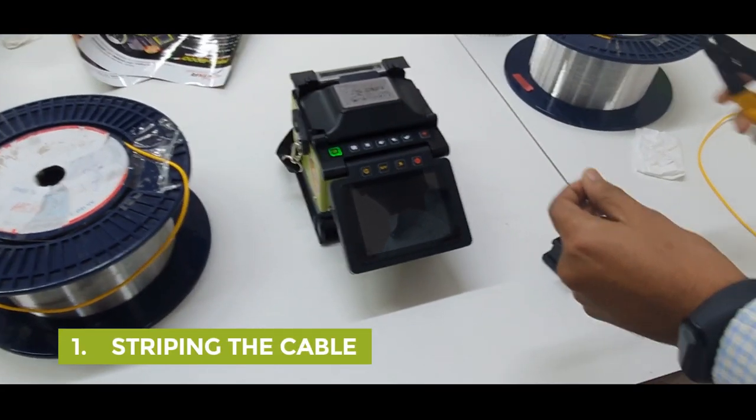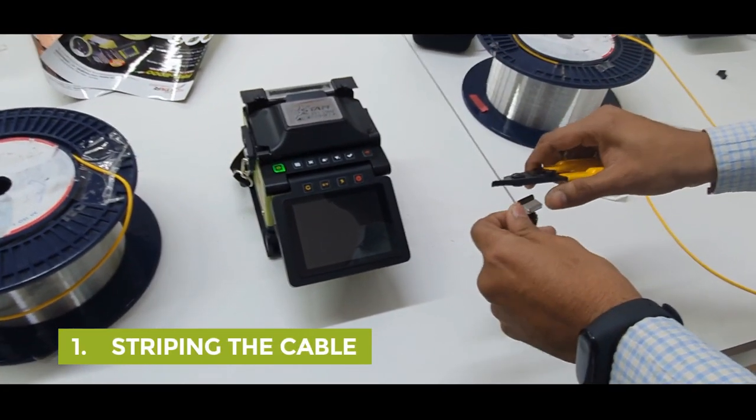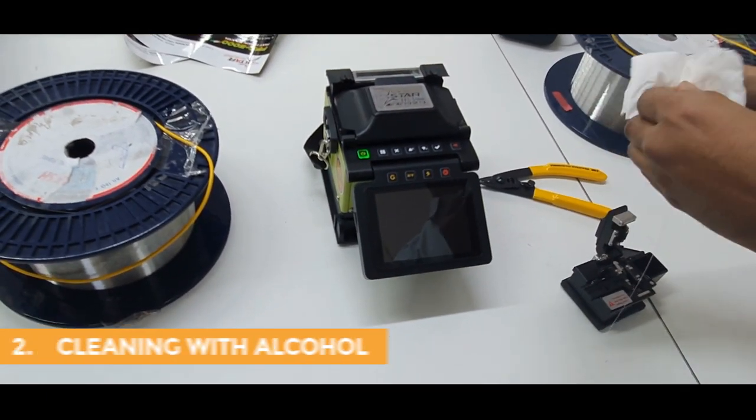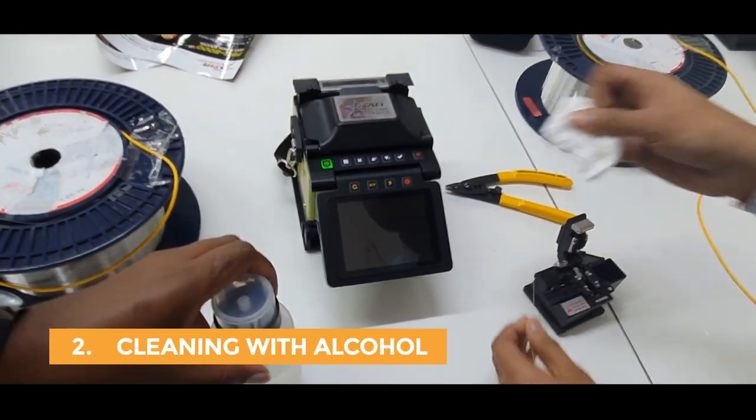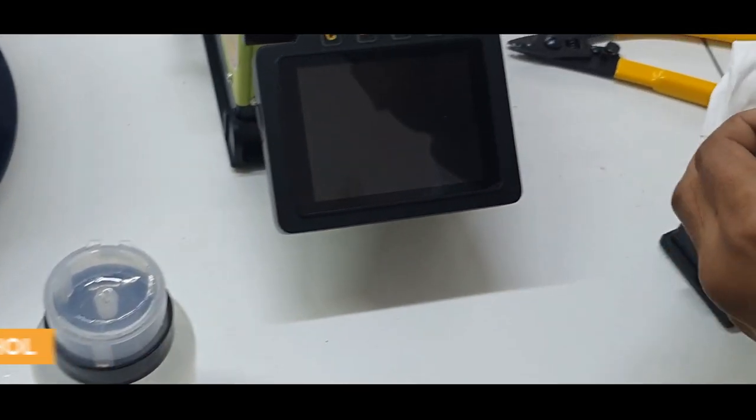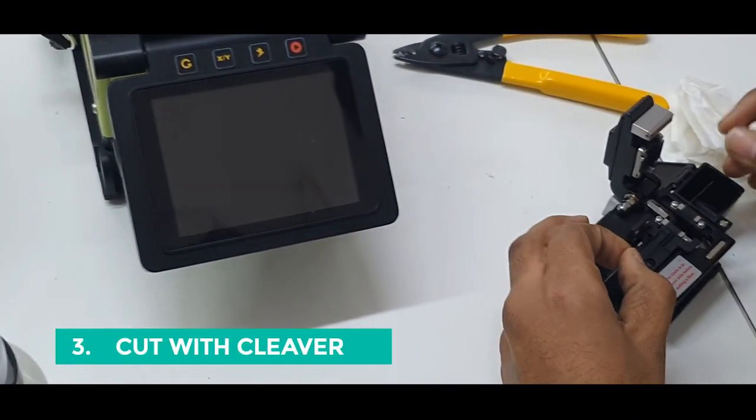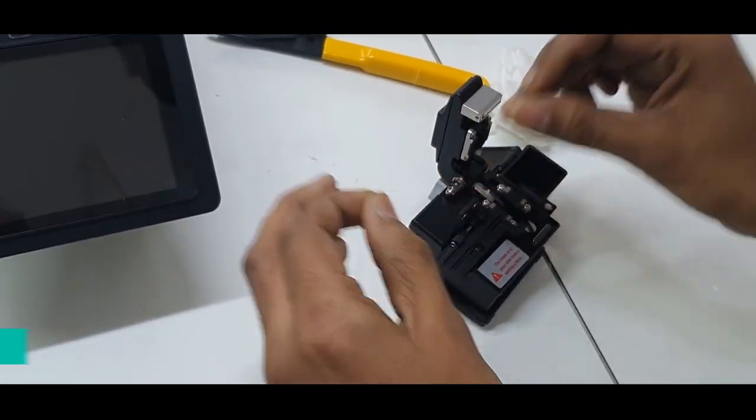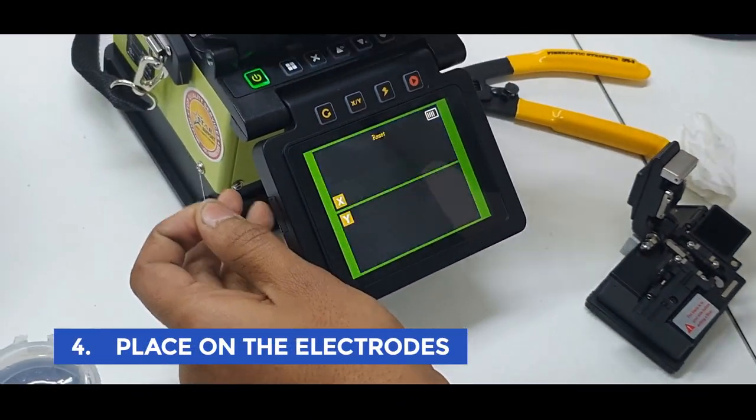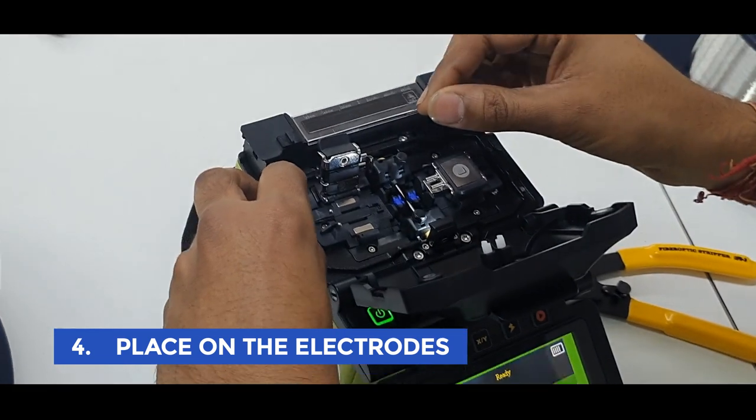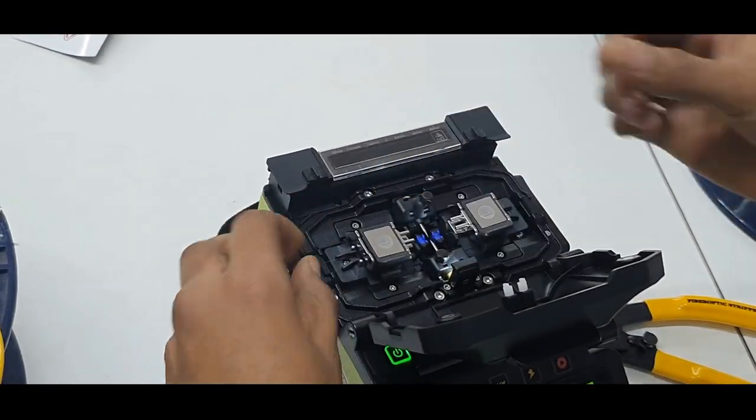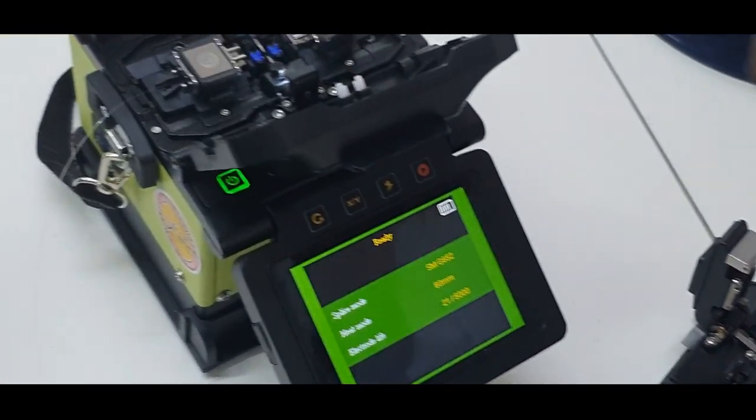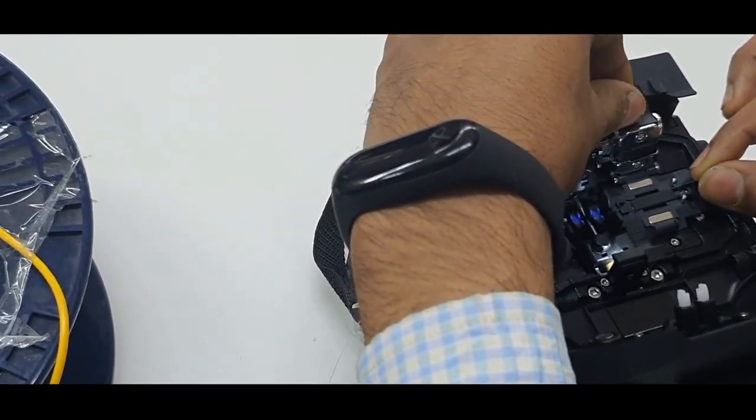The first thing is to prepare the two cords that we are going to splice. Then use our high precision cleaver and put it on the machine, following the same procedure using our cleaver, then putting it on the machine.